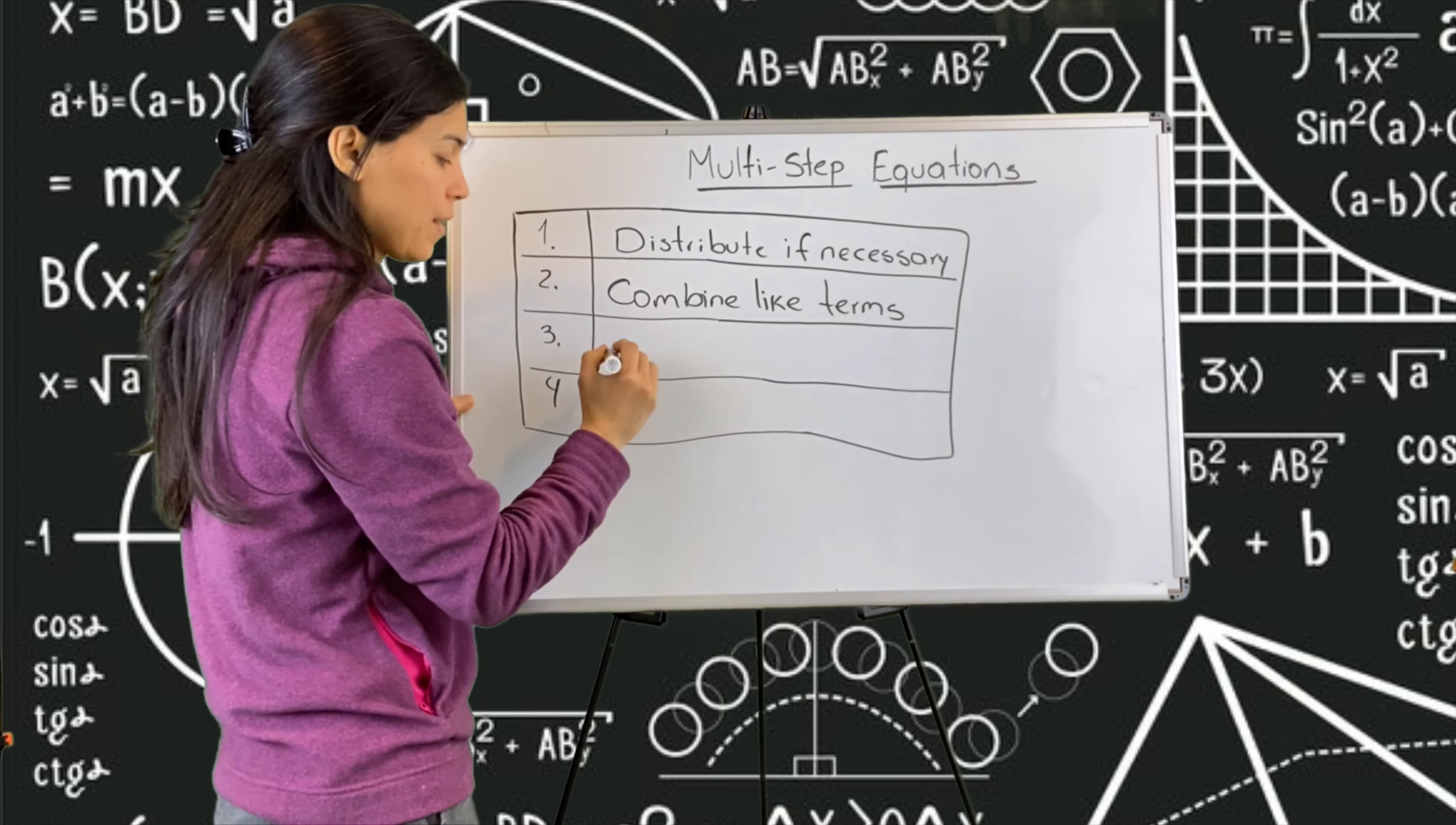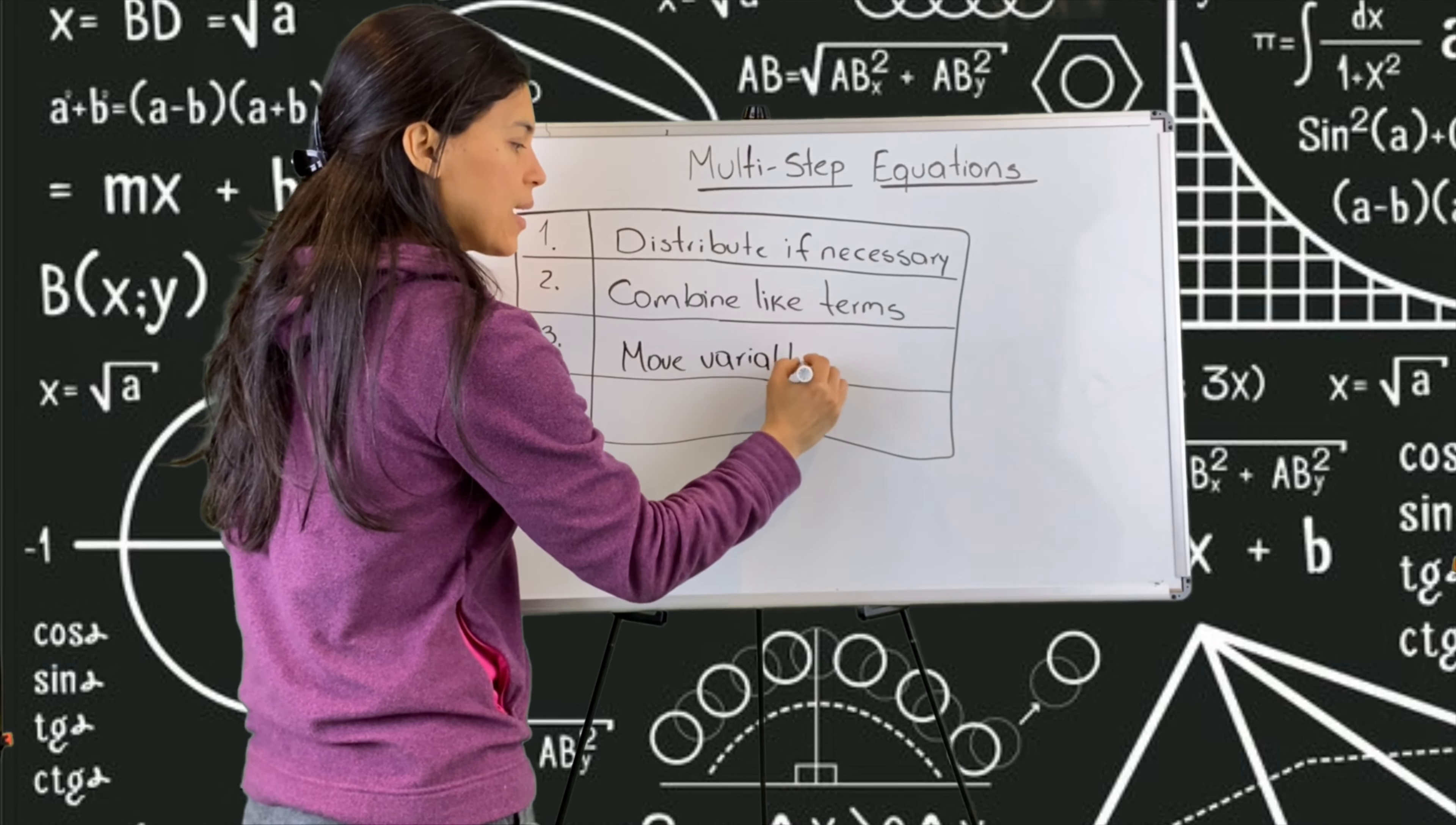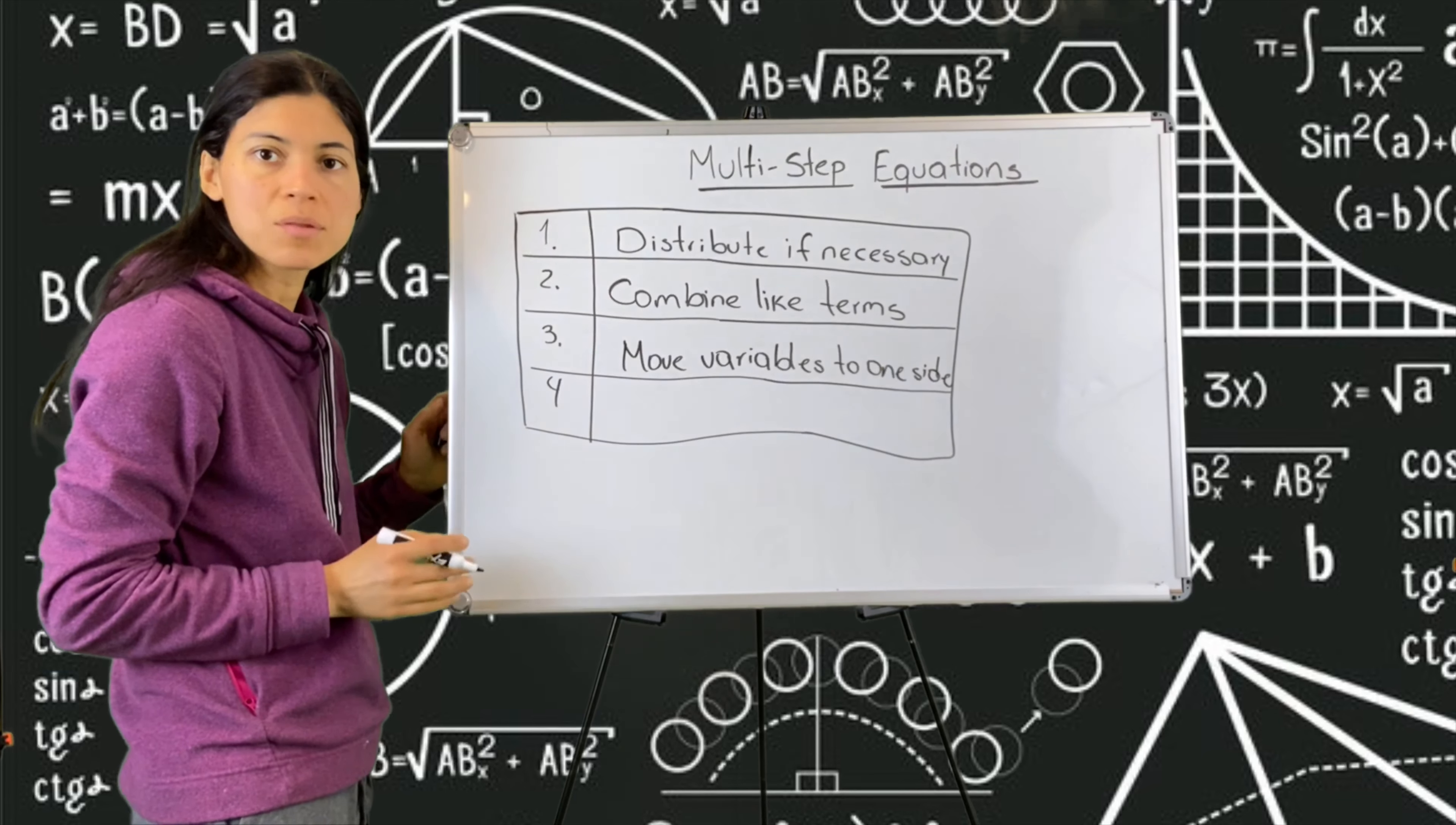Step number three is move variables to one side, because now we are looking at variables on both sides.